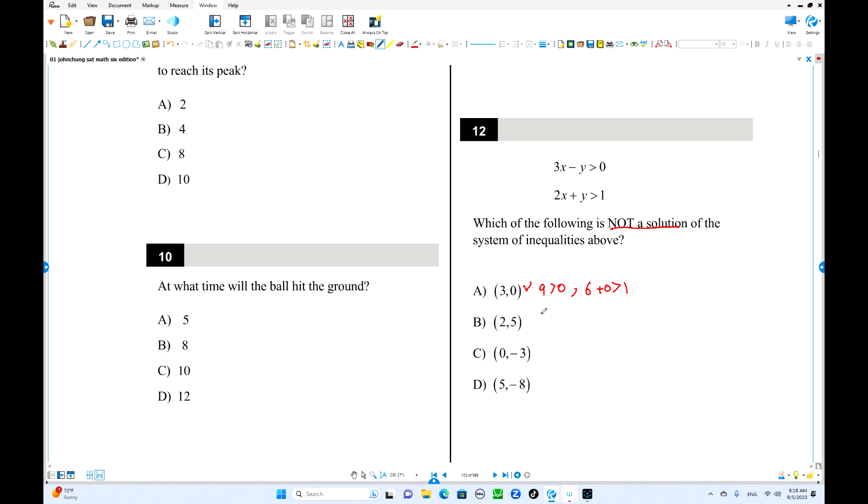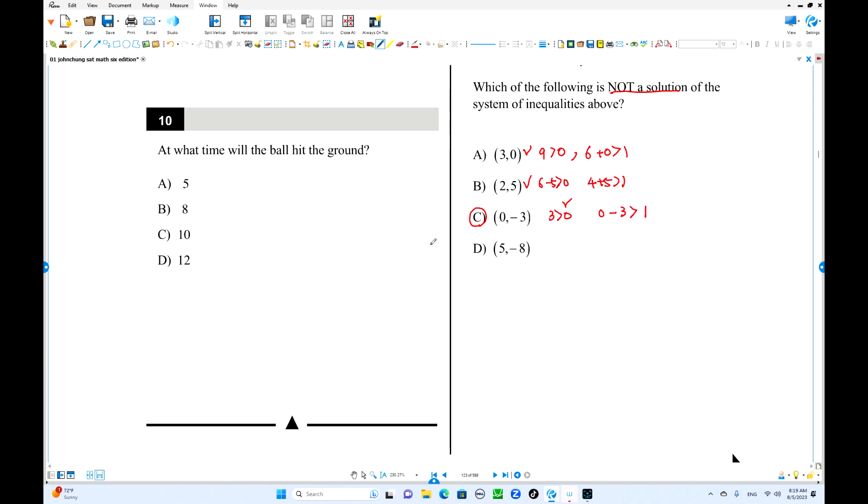Second one is 3 times 2, 6 minus 5 greater than 0, that's true. 2 times 2 is 4, plus 5 is greater than 1, that's true. This is also in the solution. Third one is when x equals 0, so 0 minus 3 is negative 3, greater than 0, that's fine. Second one is 2 times 0, 0 minus 3 is greater than 1. Negative number is not greater than 1. This does not belong to the solution set, so number 12.